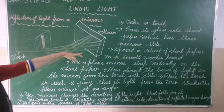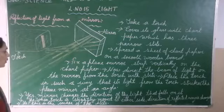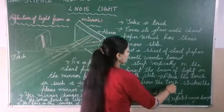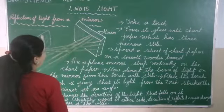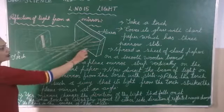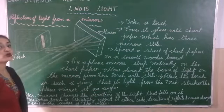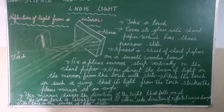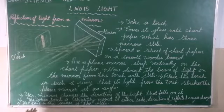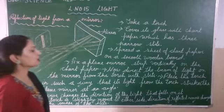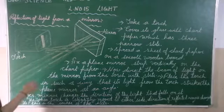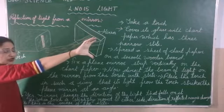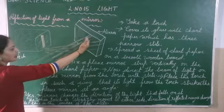Direct the light from the torch so it strikes the plane mirror at an angle. Now one angle will strike the mirror. Let's see how the direction of light changes. Our light is going straight — can the direction be changed? Yes, and light is the answer: this is reflection.